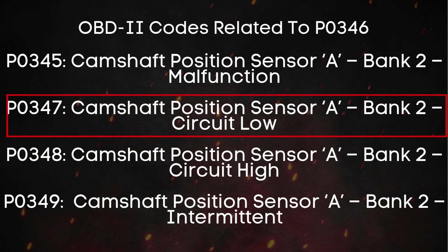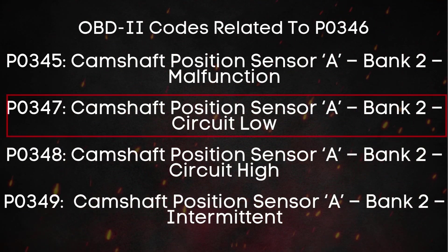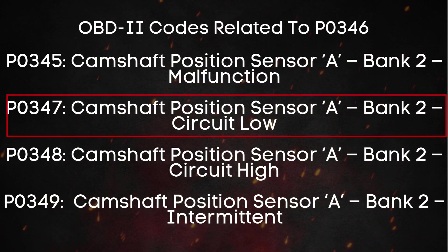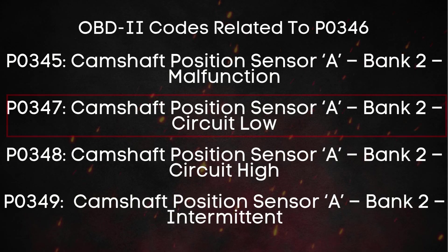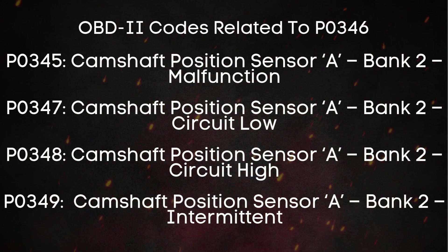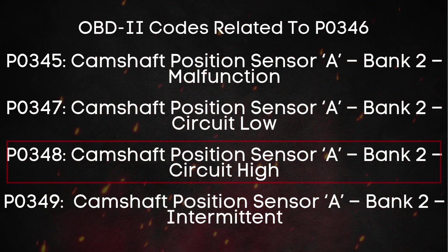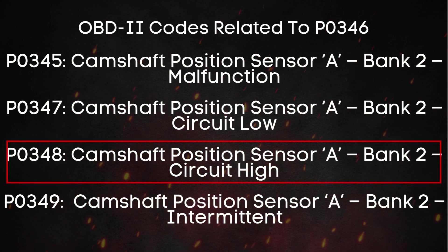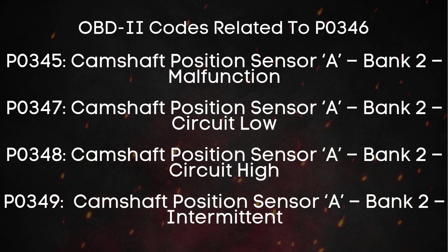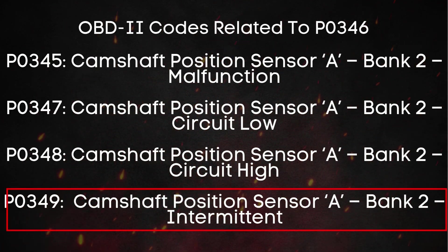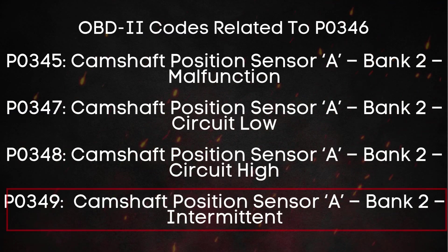Then there's P0347, which means Intake Camshaft Position Sensor for Bank 2 is Circuit Low. This usually indicates that the voltage in the sensor's signal is too low, and it could be caused by a dying sensor, damaged wiring, or corroded connections. On the flip side, you might see P0348, which is Intake Camshaft Position Sensor for Bank 2 is Circuit High — meaning the sensor is sending too much voltage, often due to a short circuit or a sensor that's completely failed. And finally, there's P0349, which stands for Intake Camshaft Position Sensor for Bank 2 is Intermittent, meaning the signal is cutting in and out.